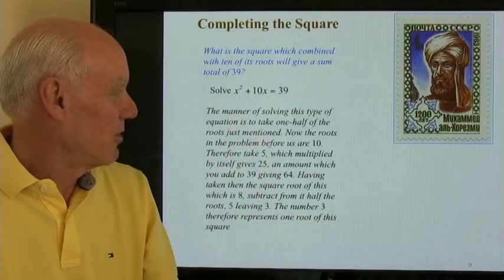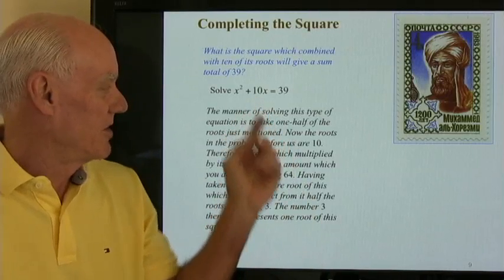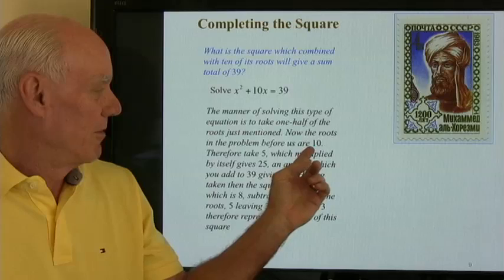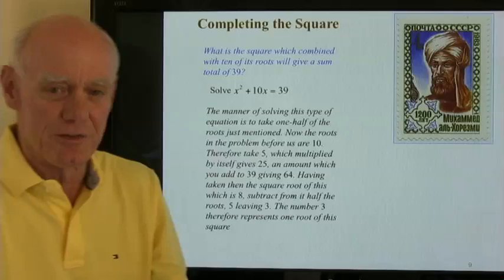The manner of solving this type of equation is to take one-half the roots just mentioned, so that's one-half of 10. Now the roots in this problem before us are 10, therefore take 5 which multiplied by itself gives 25.